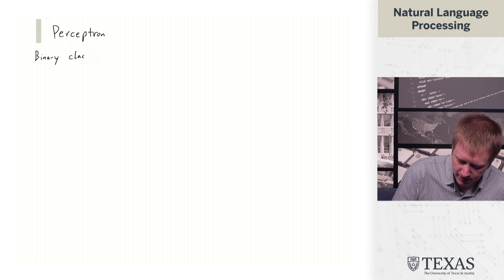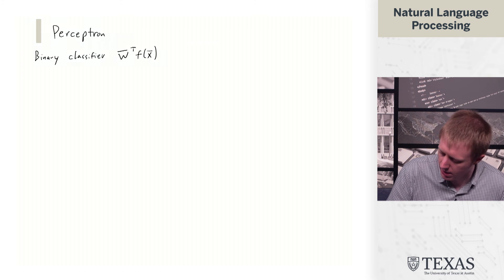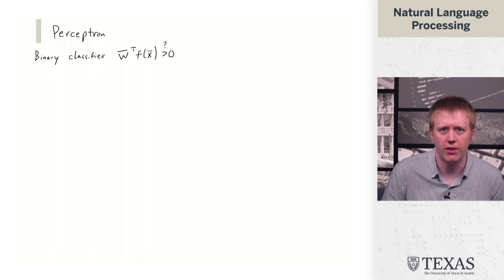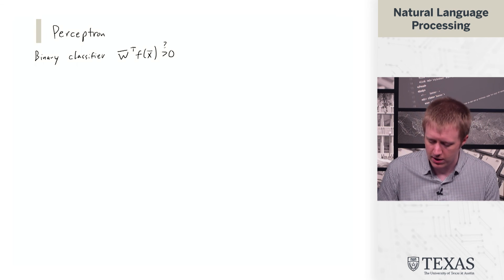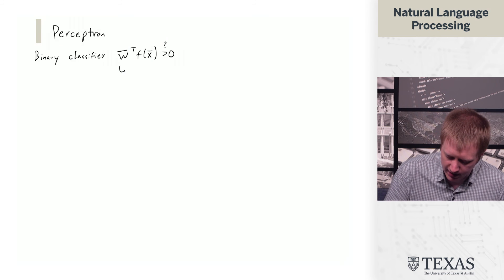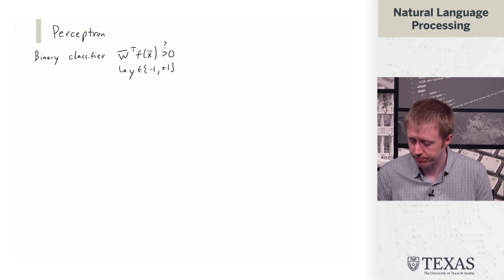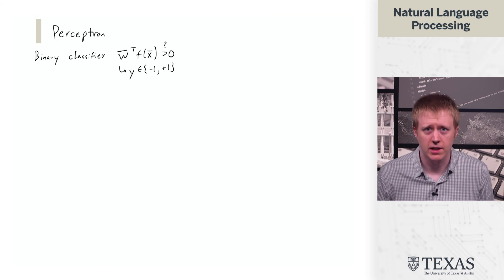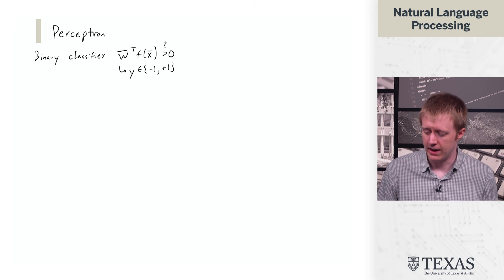Recall that a binary classifier is defined to have the following decision rule. In this case, I'm going to use whether the weights dotted with the features is strictly greater than zero. This gives us a decision y, which is either minus one if it's less than or equal to zero, or plus one if it's greater than zero. So we are defining an algorithm to learn this set of weights w from a training set.